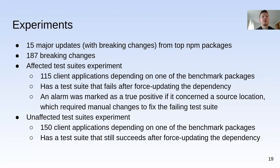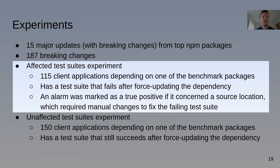We then conducted two experiments. In the first, we selected client applications that depend on the pre-update version of one of the 15 packages and where the test suite starts failing after a force-update to the new dependency version. For these clients, we know that the breaking changes are affecting the client code. We first manually patched the client so the test suite succeeded, then ran Tapir on each unpatched client and manually checked if Tapir detected the same source locations we had to adapt to fix the broken test suite.